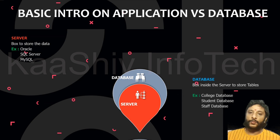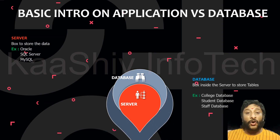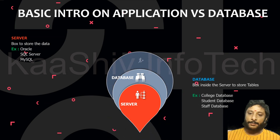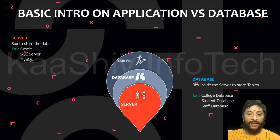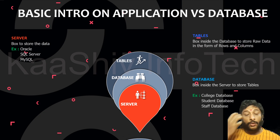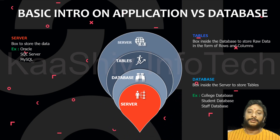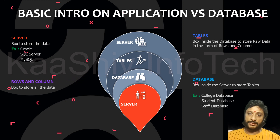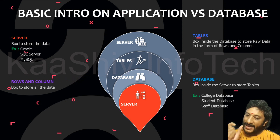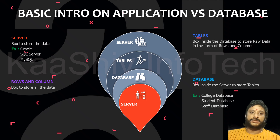The database is a box that has lots and lots of tables in it. For example, a college database, a student database, a staff database — these databases will have lots of tables. The tables will have raw data — just rows and columns. That is how the database structure is. This is the raw data where the exact information is stored.